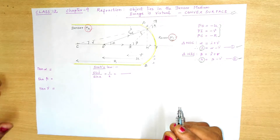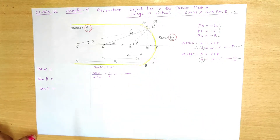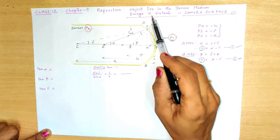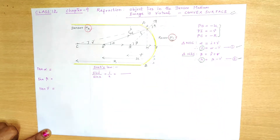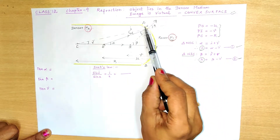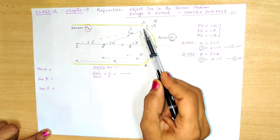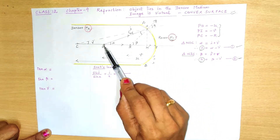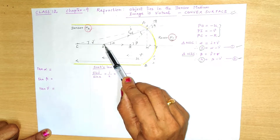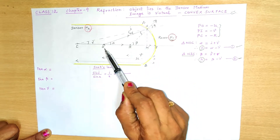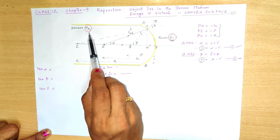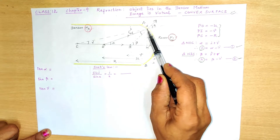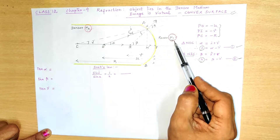Hello students. In this video we are going to learn about refraction through a convex spherical surface when the object lies in the denser medium and forms a virtual image. The surface APB is the convex surface, where the object O is kept in the denser medium and the incident light is passing from the denser medium and getting refracted towards the rarer medium.